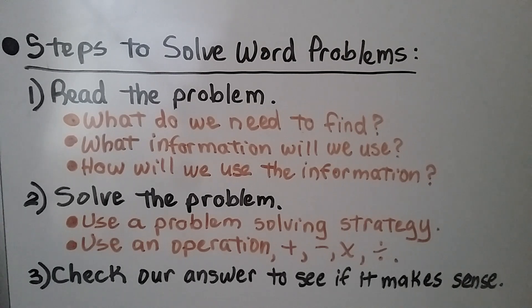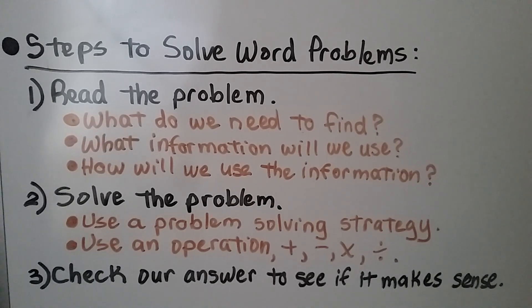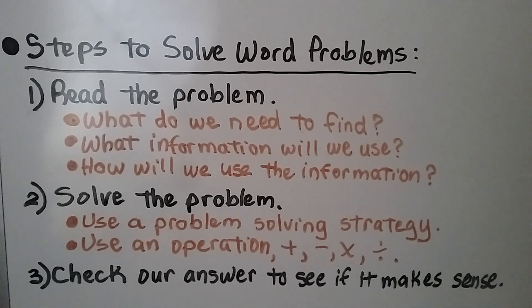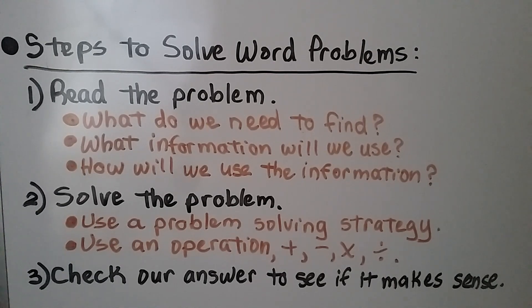The steps to solve word problems: we read the problem, figure out what we need to find or what information we will use, and how we'll use the information. Then we solve the problem using a problem-solving strategy and an operation — such as addition, subtraction, multiplication, or division. And we check our answers to see if it makes sense.